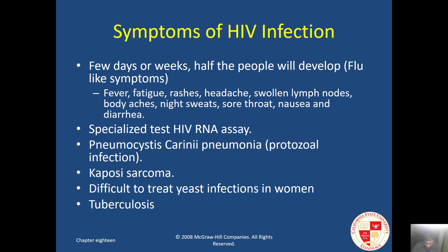Once HIV is transmitted, signs and symptoms include: during the first few days or weeks, about half of people will develop flu-like symptoms such as fever, fatigue, rashes, headaches, swollen lymph nodes, body aches, night sweats, sore throat, nausea, and diarrhea. There are special tests including an RNA assay, and certain opportunistic infections can occur, including pneumonia and skin lesions called Kaposi sarcoma.